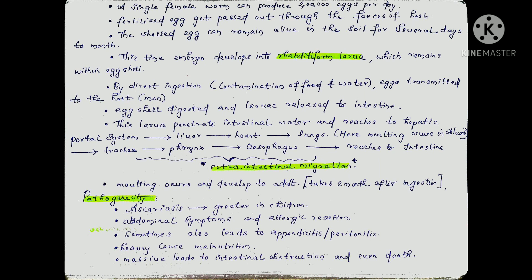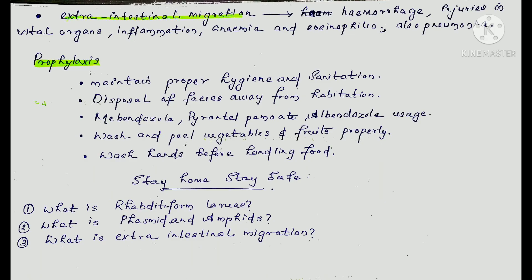In terms of pathogenesis due to extra-intestinal migration, the effects include: hemorrhage to vital organs, injuries, inflammation, and anemia. These are the pathogenic effects of Ascaris infection on the body.